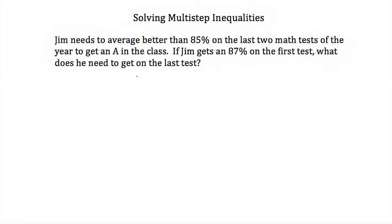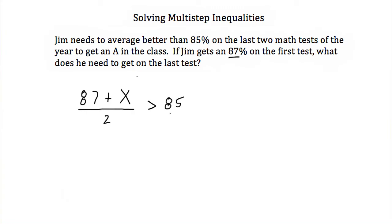Next, let's see how we can apply this. Here we have a word problem: Jim needs to average better than 85 percent on the last two math tests of the year to get an A in the class. If Jim gets an 87 on the first test, what does he need to get on the last test? To solve our inequality, first we have to set it up. The average of the two tests would be 87 plus the score on the second test, divided by 2. And we know that has to be greater than 85.